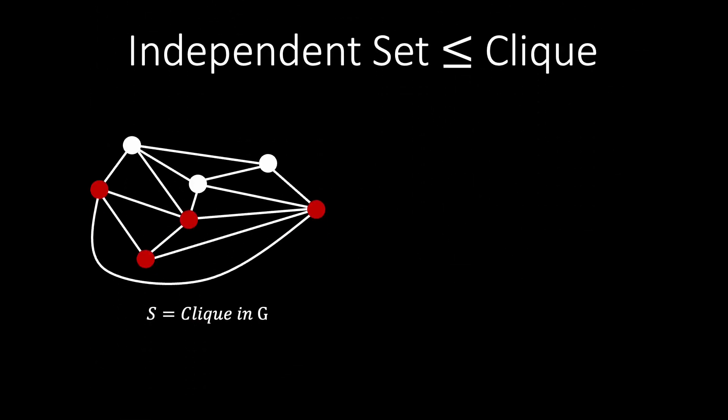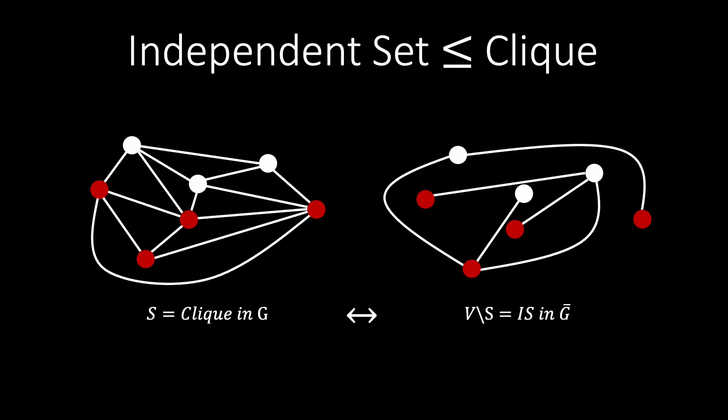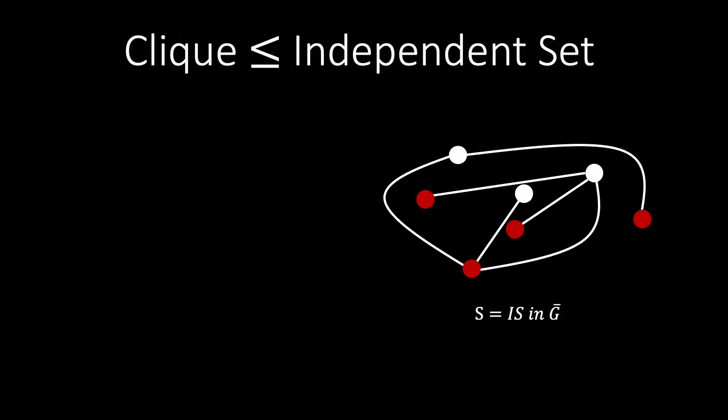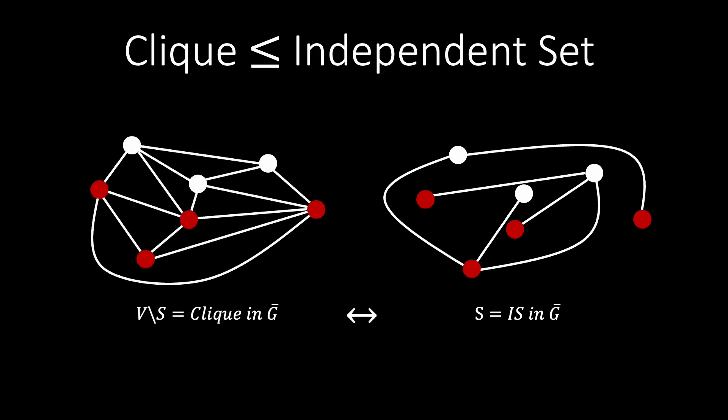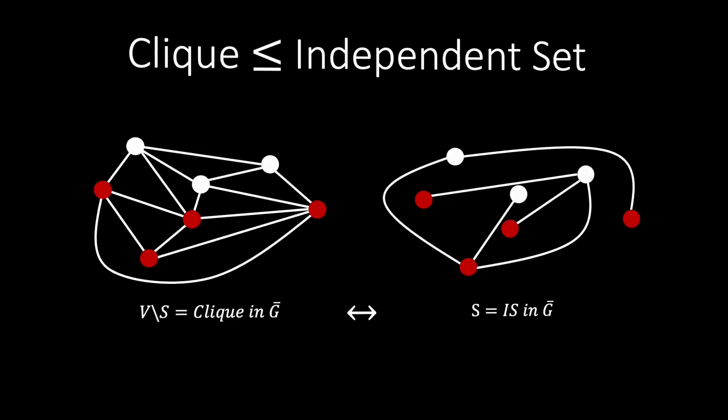Given a clique in G, the same vertices form an independent set in the complement graph. The reason is that the vertices in a clique are pairwise connected. Hence, there is no edge between any pair of these vertices in the complement graph. This reduction also works the other way: if we have an independent set, then the same vertices form a clique in the complement graph.